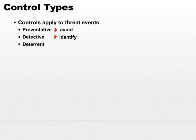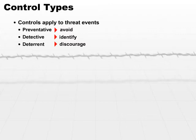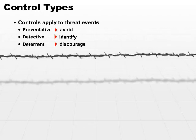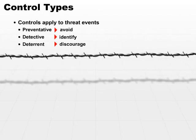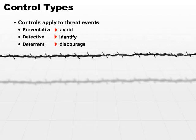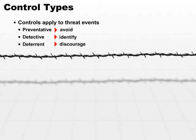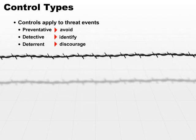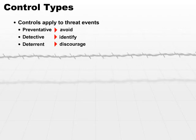We also have deterrent controls. A deterrent control is designed to discourage an event from occurring in the first place. It's very similar to preventative, but whereas a preventative control actually stops the event from occurring, a deterrent may allow the event to occur but puts in very stringent consequences should that event actually happen — in a way, punishing the subject for that event occurring.